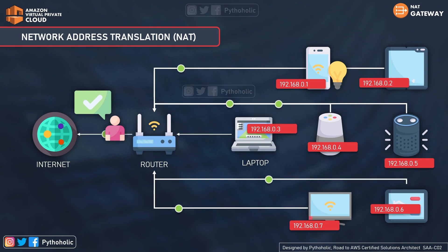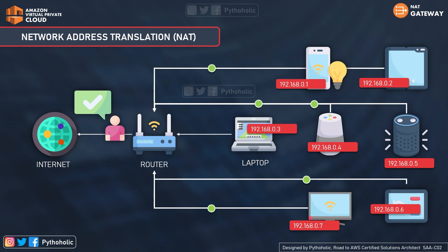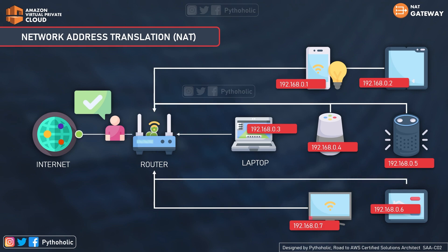When you connect your devices to the router or NAT device, it keeps track of the MAC addresses of the devices, their IP addresses, and all the requests being made. The router does that using NAT — and there are other things like routing as well, but we are focusing on NAT here.